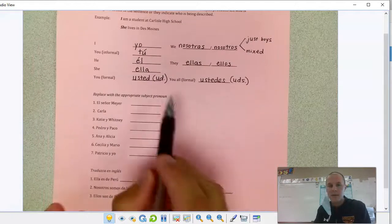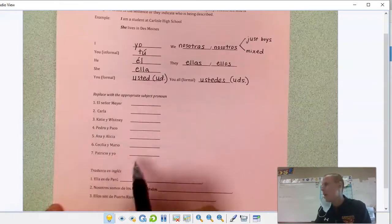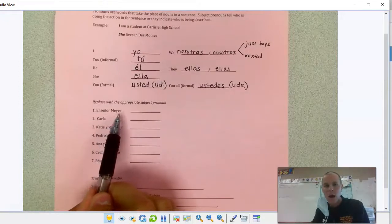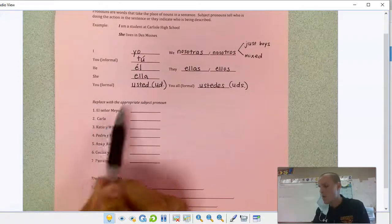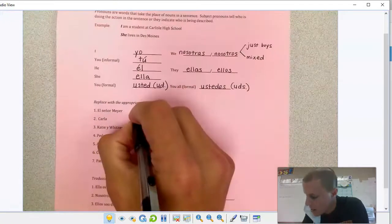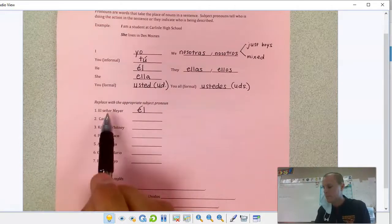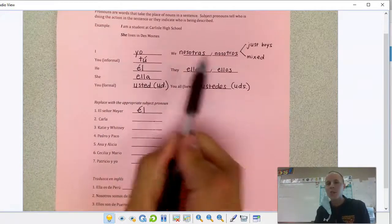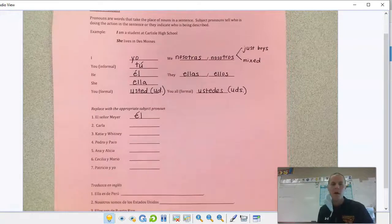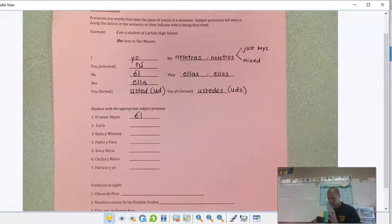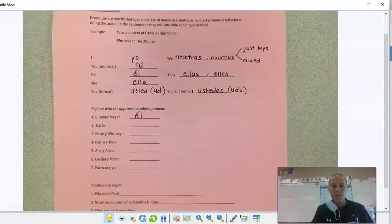Good. We've got seven examples here. Instead of using their names, we want to switch them to a subject pronoun. So if I was talking about Mr. Meyer, instead of saying Mr. Meyer's name over and over, I could say he, like he is funny. Take the name, switch it to a subject pronoun. I'll give you a minute or so to do that. We'll walk through it together.